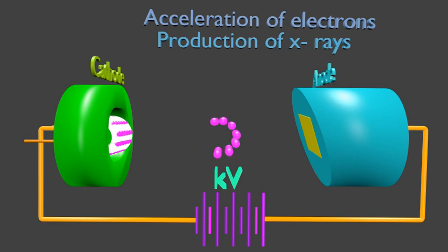These high speed or high kinetic energy electrons will collide with atoms of X-ray target, and X-rays will be produced. X-rays are produced from the target by characteristic X-ray production and Bremsstrahlung X-ray production.